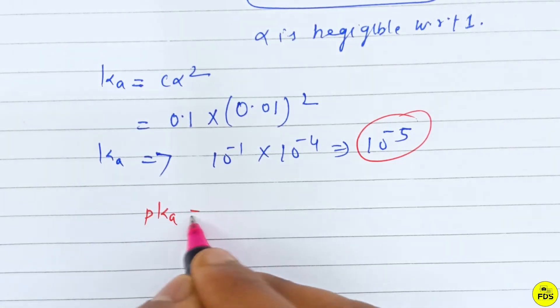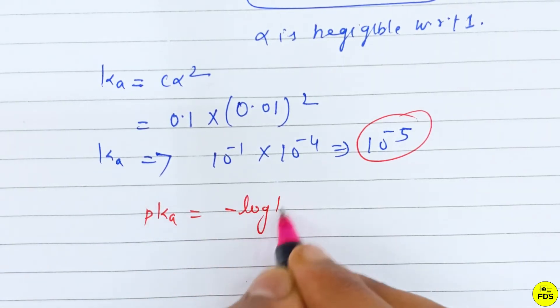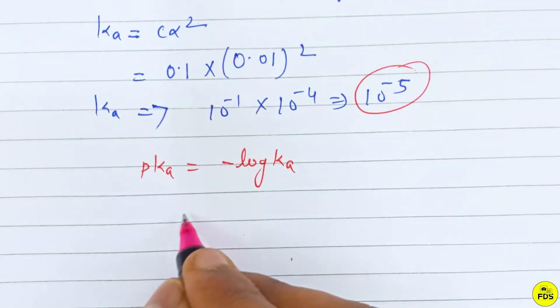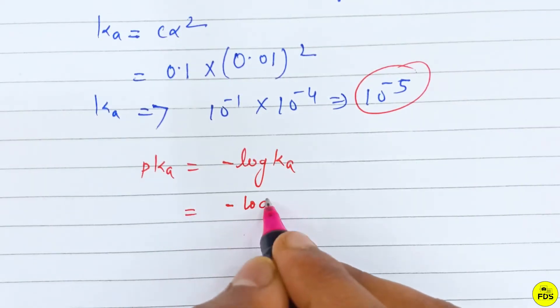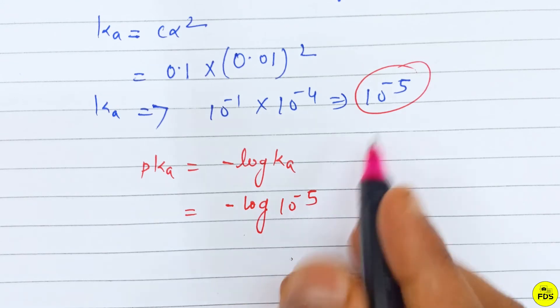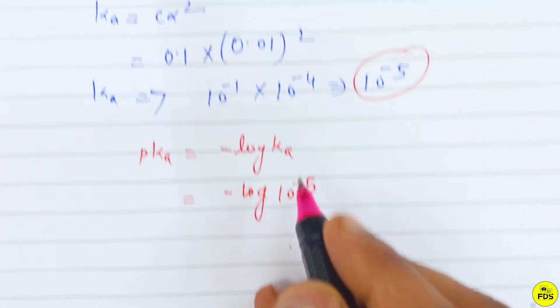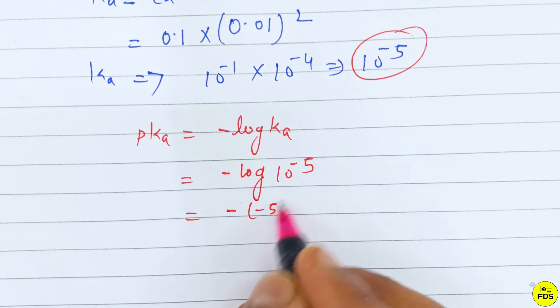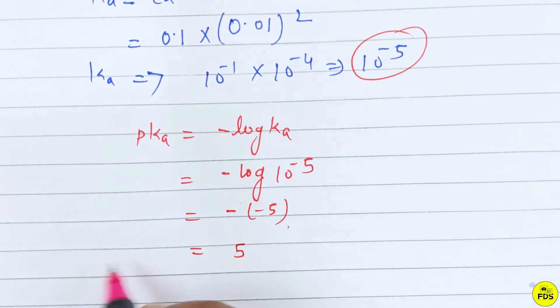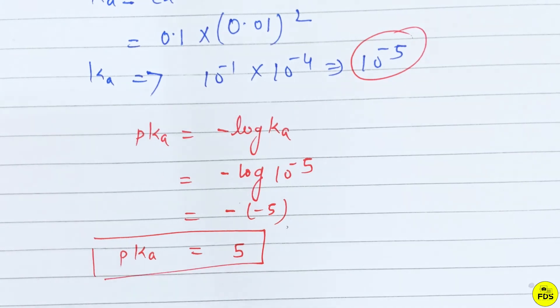pKa is equal to minus log Ka. So minus log 10^-5 equals minus times minus 5, which is 5. So the pKa value is 5.